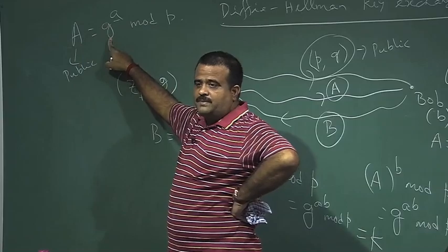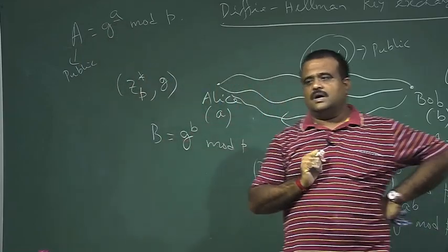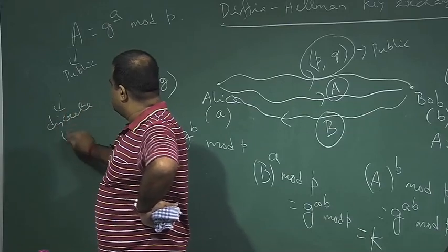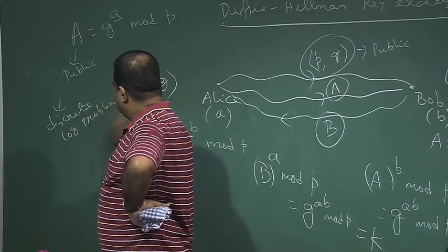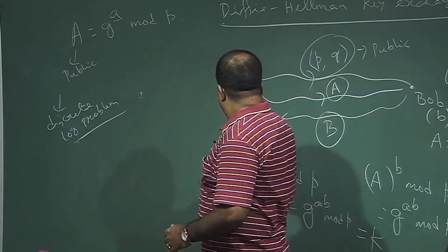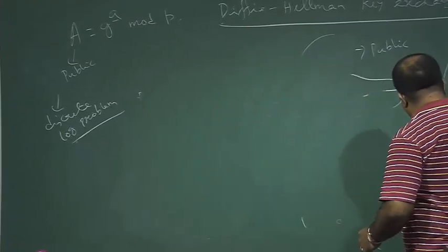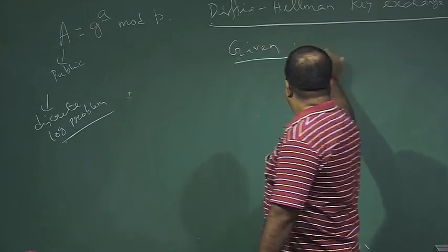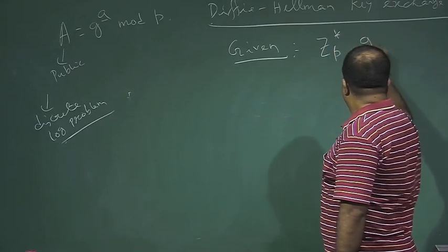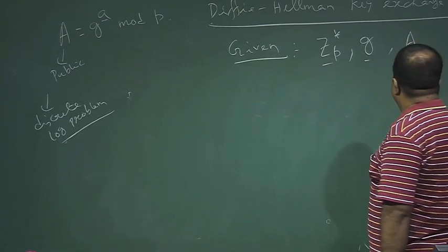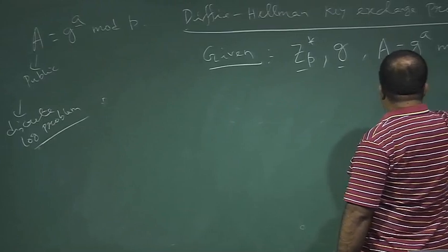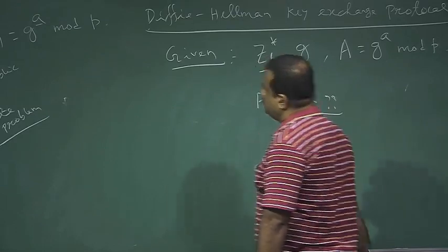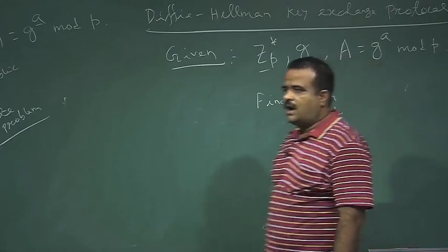The security of this protocol relies on the Discrete Logarithm Problem. Given Z_p*, where the generator g is public and capital A = g^a mod p is known, the problem is to find the secret a. This is called the Discrete Logarithm Problem, and it is computationally hard if p is a large prime.